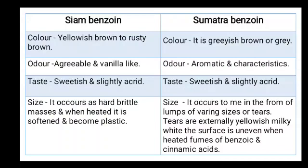Taste of Siam benzoin: sweetish and slightly acrid. Sumatra benzoin: same taste — sweetish and slightly acrid. Size of Siam benzoin: it occurs as hard brittle masses and when heated, it softens and becomes plastic. Size of Sumatra benzoin: it occurs in the form of lumps of varying sizes or tears. Tears are externally yellowish, milky white. The surface is uneven when heated, producing fumes of benzoin and cinnamic acid.